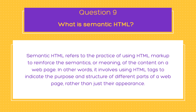In other words, semantic HTML involves using HTML tags to indicate the purpose and structure of different parts of a web page, rather than just their appearance. For example, instead of using a div or span tag, semantic HTML encourages the use of more specific tags like p for paragraphs, h1 to h6 for headings, nav for navigation menus, and article for independent pieces of content. By using these tags, the content becomes more structured, meaningful, and machine-readable, which improves accessibility, SEO, and overall usability. Semantic HTML also helps separate content from the presentation layer, making it easier to update a site's design without affecting its underlying structure.